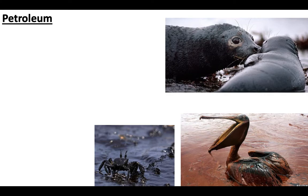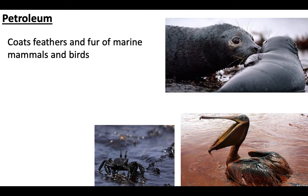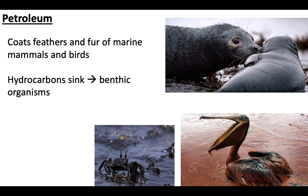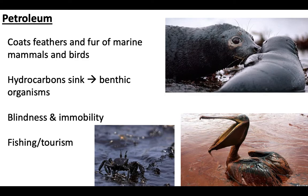Oil is another major chemical pollutant — and those photos of oil-covered birds and marine mammals are very difficult to look at. Oil can coat feathers and fur, making it difficult to swim, stay warm, or fly. Hydrocarbons like petroleum will sink and completely cover benthic organisms on the sea floor, smothering them, causing blindness, and immobilizing them. Oil spills also do significant damage to fishing and tourism industries.